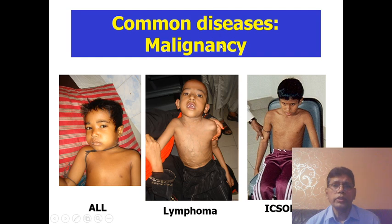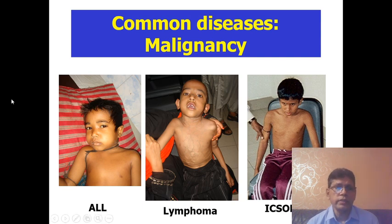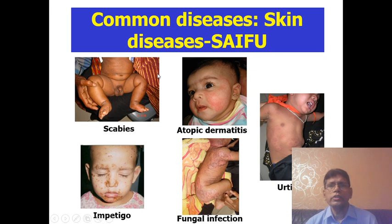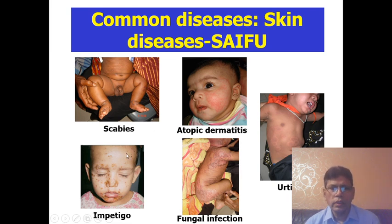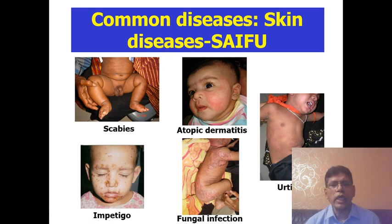Common malignancies: most important is acute lymphoblastic leukemia, then lymphoma and brain tumor. If you want to know one malignant disease, that is leukemia. Common skin diseases: most important is scabies, then atopic dermatitis, impetigo, fungal infection, and urticaria. Just remember the mnemonic SAIFУ — S for scabies, A for atopic dermatitis, I for impetigo, F for fungal infection, U for urticaria — and you can add L for lice. If you know SAIFU, you don't need to know any other skin disease unless you become a dermatologist.